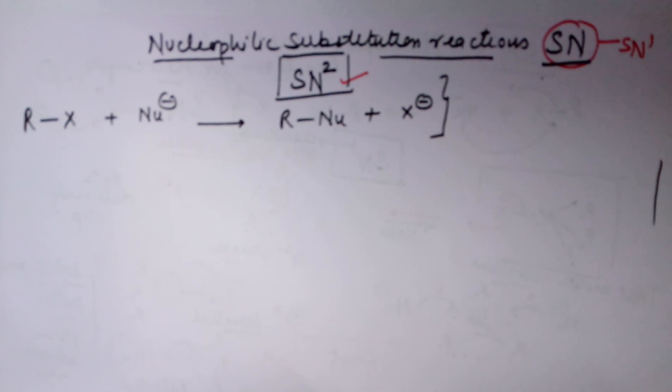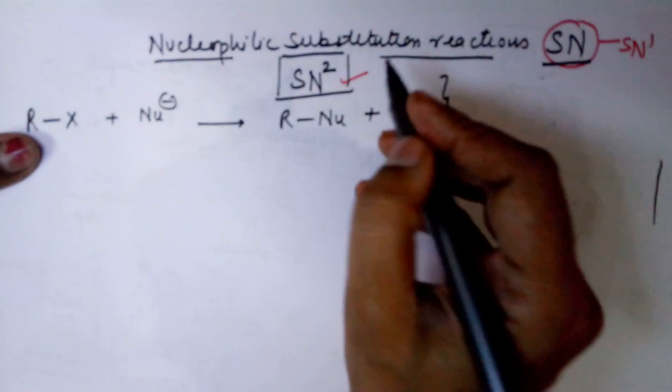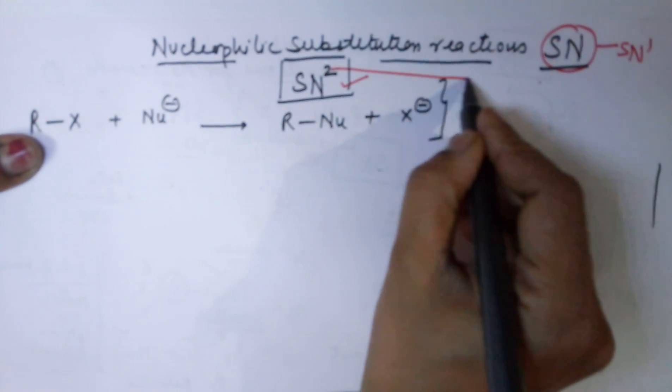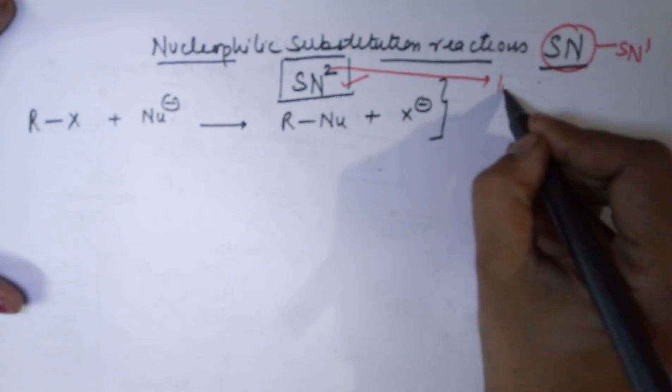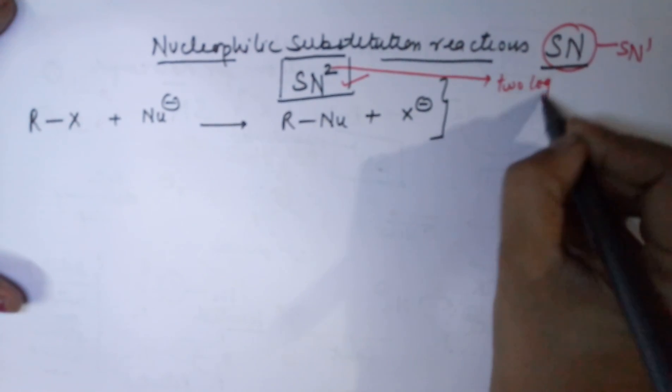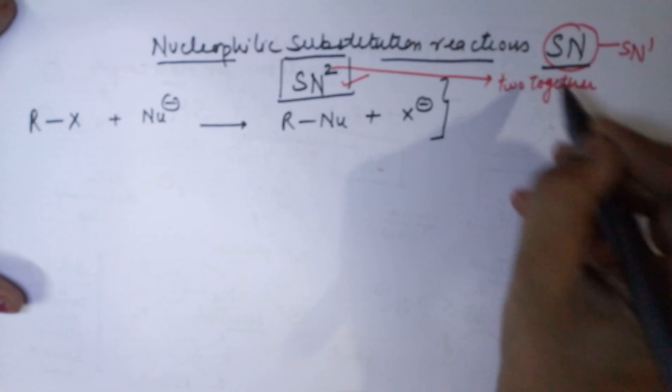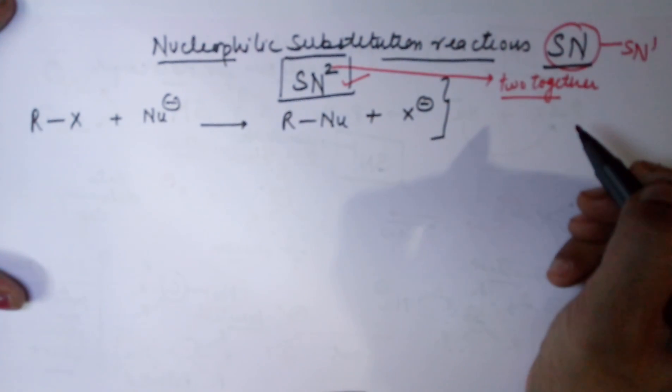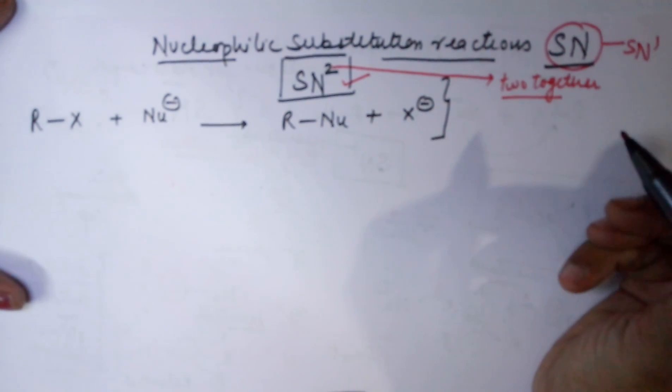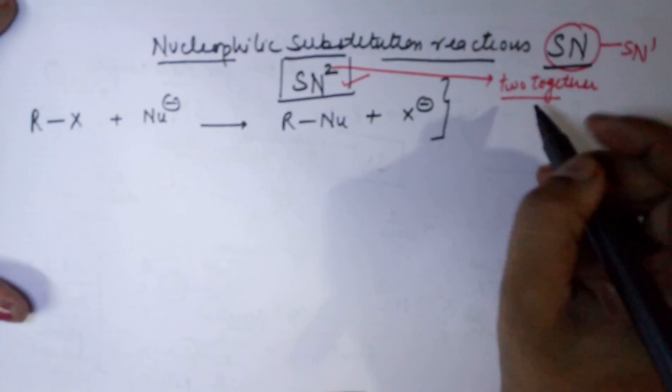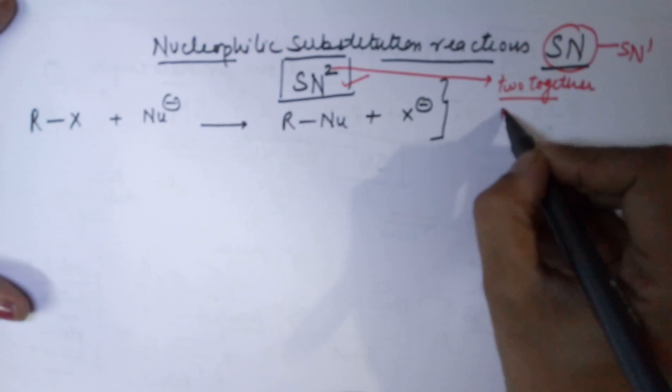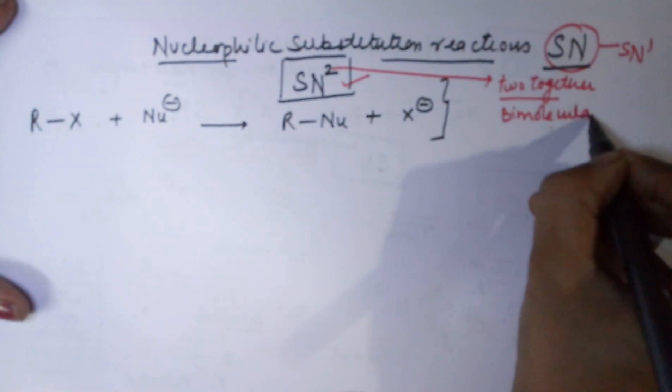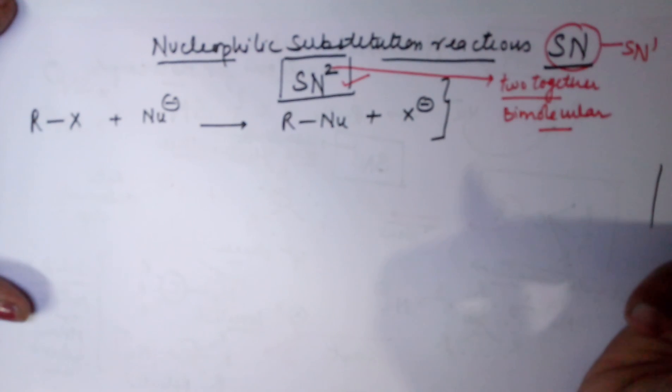The SN2 type of reactions, the word 2 is your keyword. And this 2 stands for 2 together, which means two steps will take place together. Technically, it is not 2 together. I just say 2 together to make it easier for you to understand the mechanism. And it could be a keyword for you. Actually, the word means bimolecular. Why so? I would be taking that up a little later.